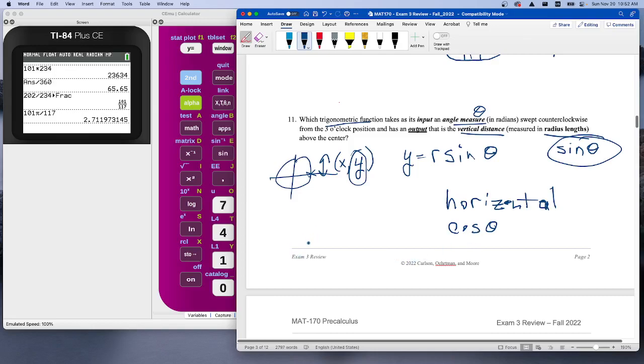And then the last one, if we want the slope of the ray, like this ray here—this one would be negative, obviously—that's going to give us the tangent of that angle. The tangent gives us the slope of the ray. That's 11. Thank you.